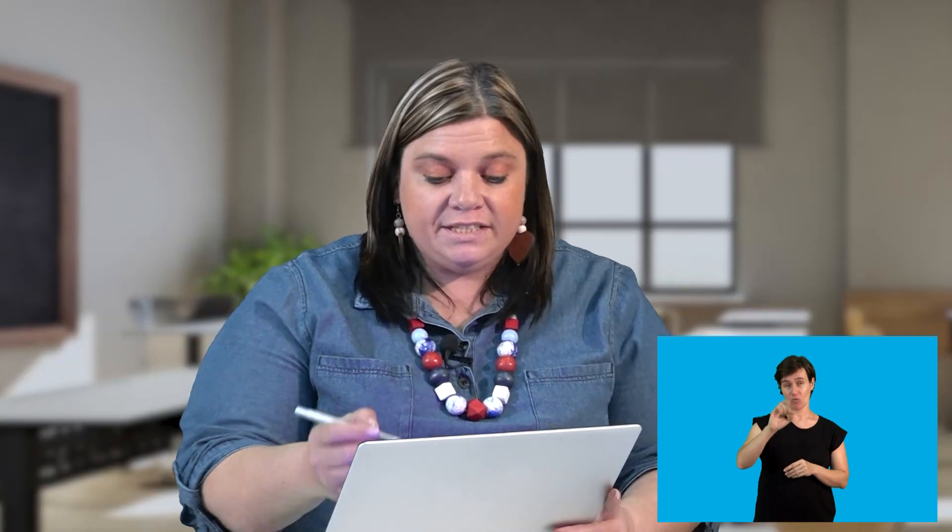Bongani buys rectangular metal sheets with dimensions 2.2m by 3.5m. Calculate the maximum number of shelves that can be cut from one sheet. A shelf is 1,650mm long and 650mm wide.